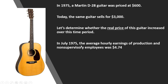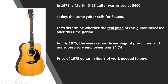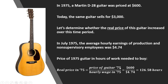In July 1975, the average hourly earnings of production and non-supervisory employees was $4.74. The price of the 1975 guitar in hours of work needed to buy it is given by the price of the guitar ($600) divided by the average hourly wage ($4.74), meaning it took a worker roughly 127 hours to be able to buy this guitar.